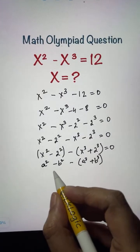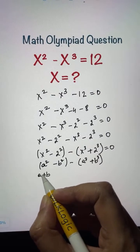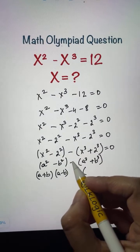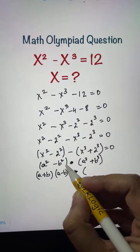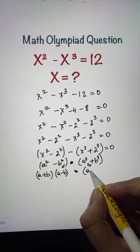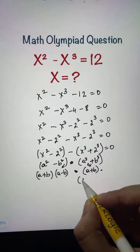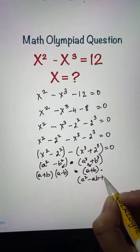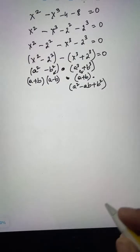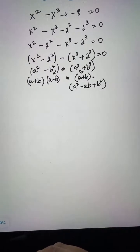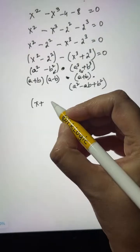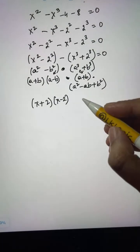The formula for a squared minus b squared is (a + b)(a − b), and the formula for a cubed plus b cubed is (a + b)(a squared minus ab plus b squared). Applying these with a = x and b = 2, the first term gives (x + 2)(x − 2).